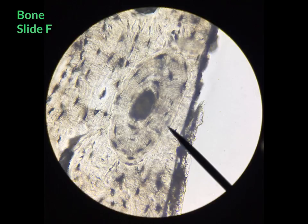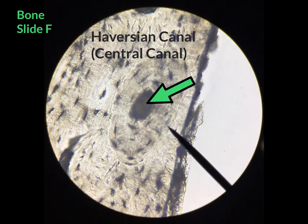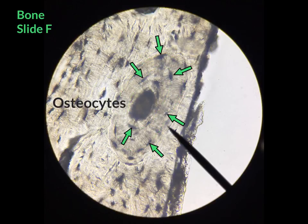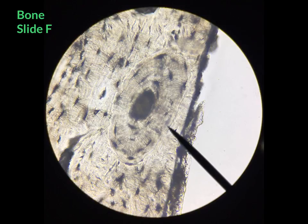First you have the Haversian canal, or central canal, which is where the blood vessels pass through. This is followed by the lamella, which is the ring of bone produced by the osteocytes, and then the osteocytes themselves — the bone cells visible as the black specks shown here. Finally, there are the canaliculi, which means tiny little canals.